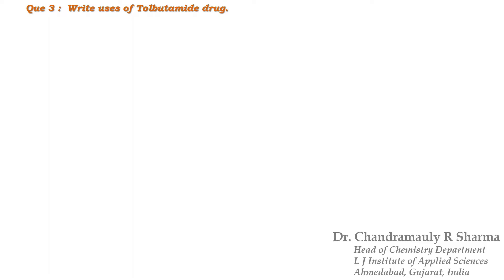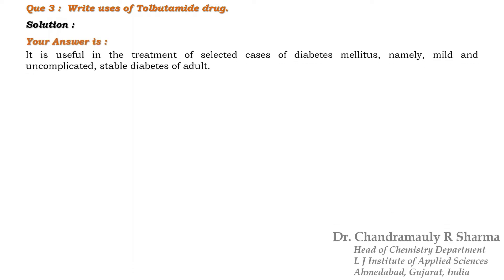The next question is just given on your screen: write the uses of tolbutamide drug. Your answer is it is used in the treatment of selected cases of diabetes mellitus, namely mild and uncomplicated stable diabetes of adults. It is one of the fundamental drugs that doctors generally use for the treatment of diabetes in the primary stage.